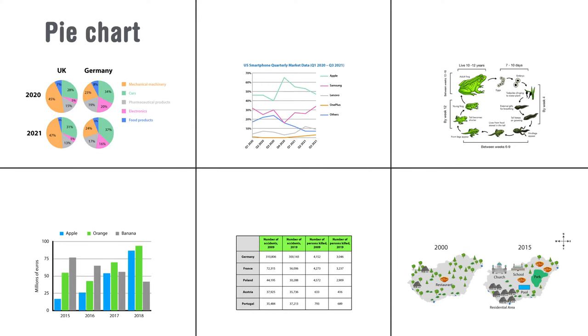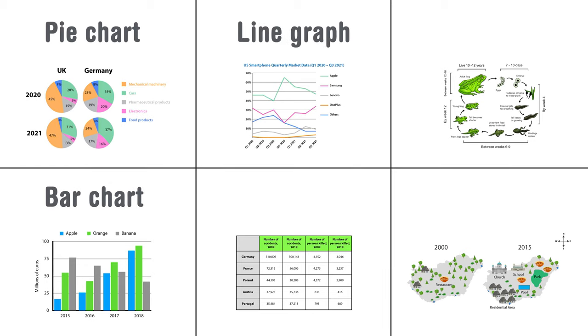In IELTS academic writing task one, you might be given a pie chart, a bar chart, a line graph, a table, a cycle, or a map to describe. In the following videos I'm going to teach you how to write each one of those types of questions with examples.